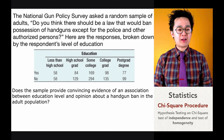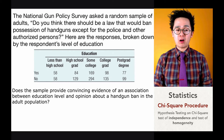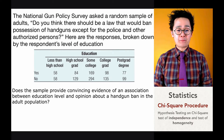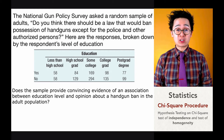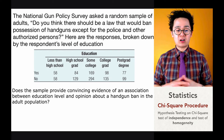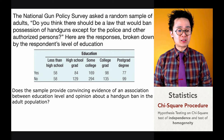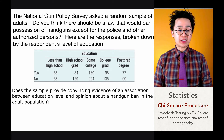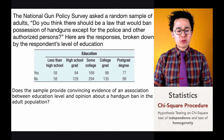For this particular case, the National Gun Policy Survey asked a random sample of adults: do you think there should be a law that would ban possession of handguns except for police and other authorized persons? The responses are given in a table categorized by educational level, from less than high school education up to postgraduate degree, with adults responding yes or no. Our test asks: does the sample provide convincing evidence of an association between education level and opinion about a handgun ban in the adult population?